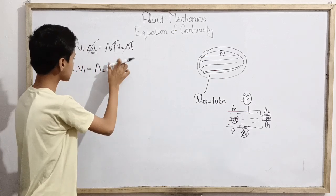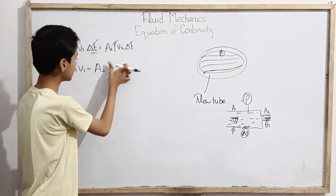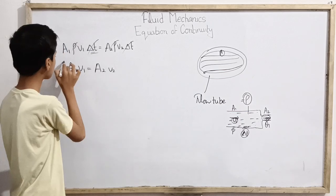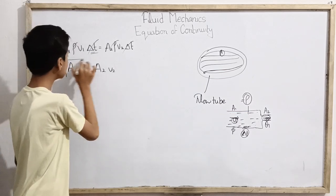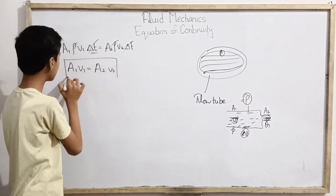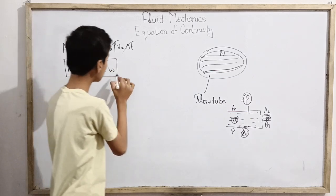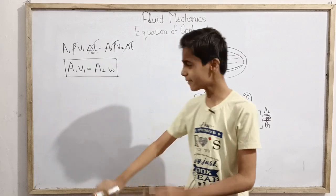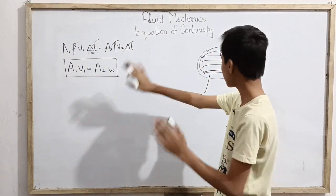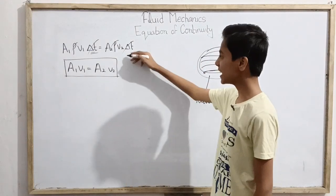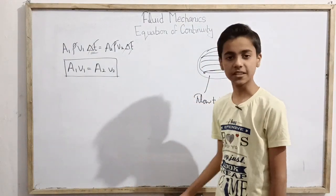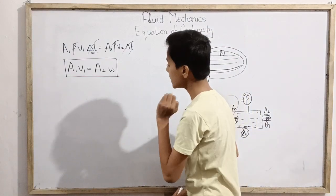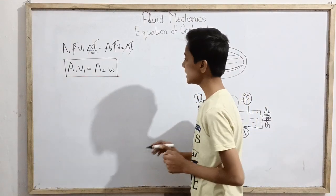So A1 V1 equals A2 V2. This basic equation is known as the equation of continuity. The derivation is not very long — it only applies a certain logic and you will get it right away. This equation is called the equation of continuity.